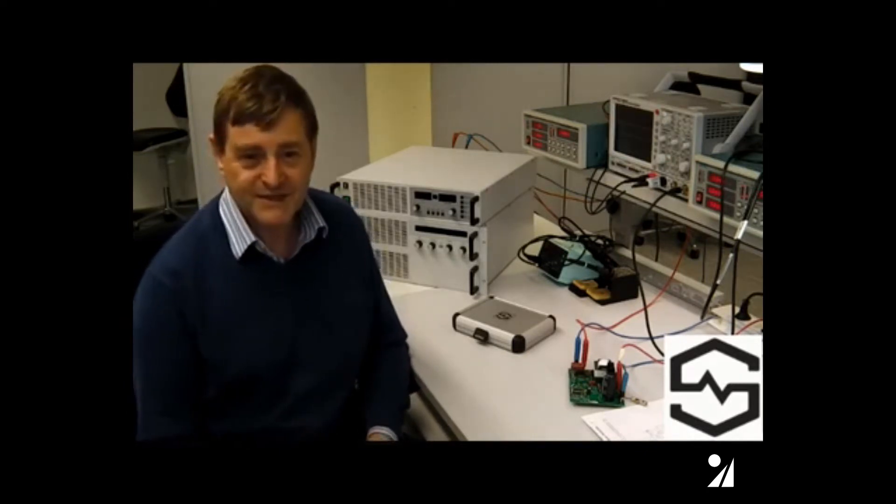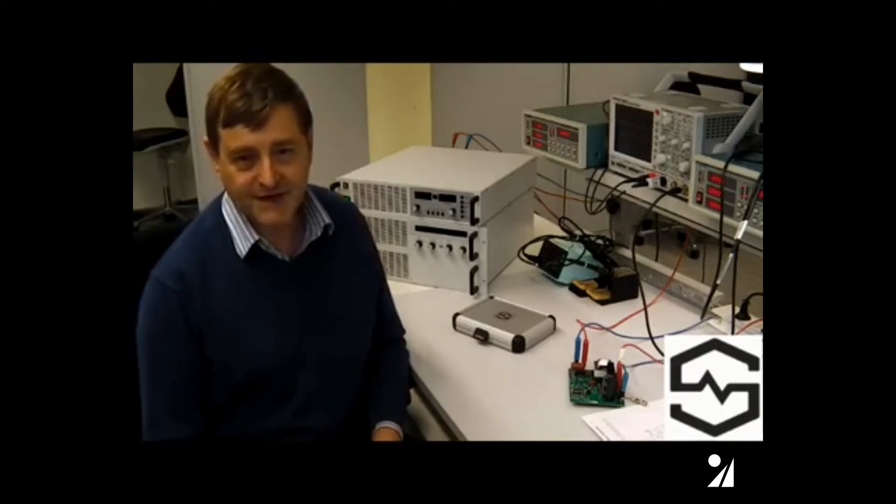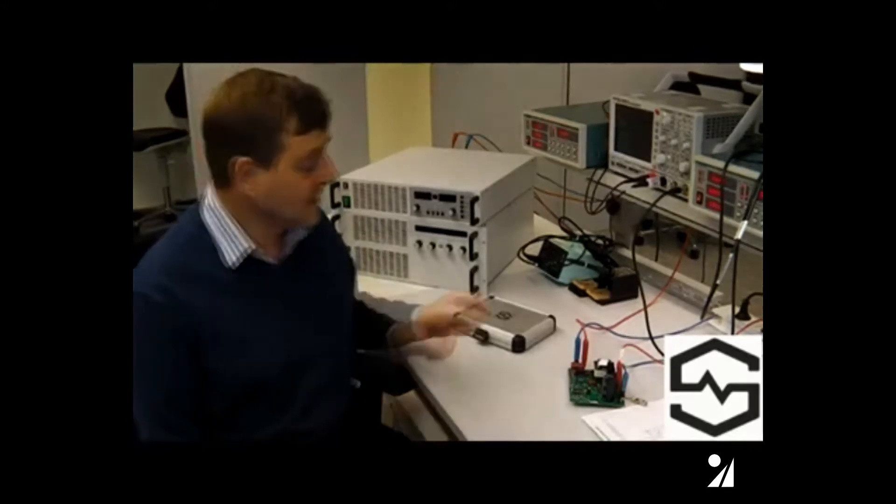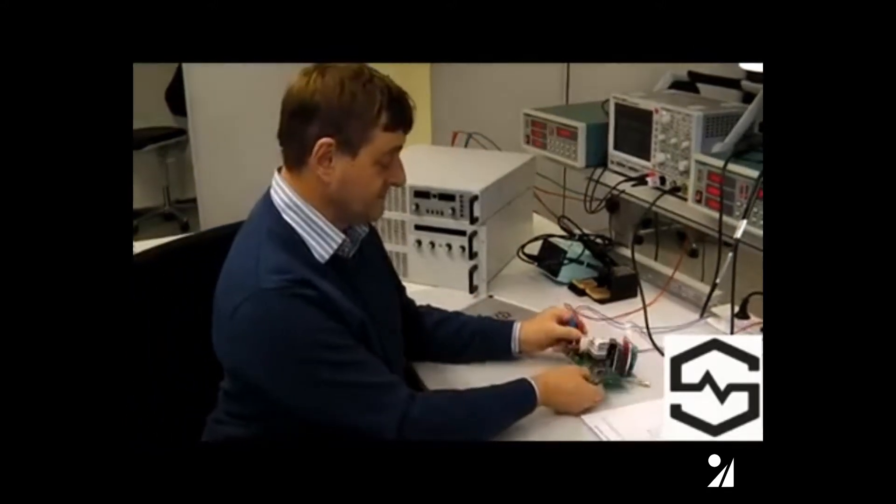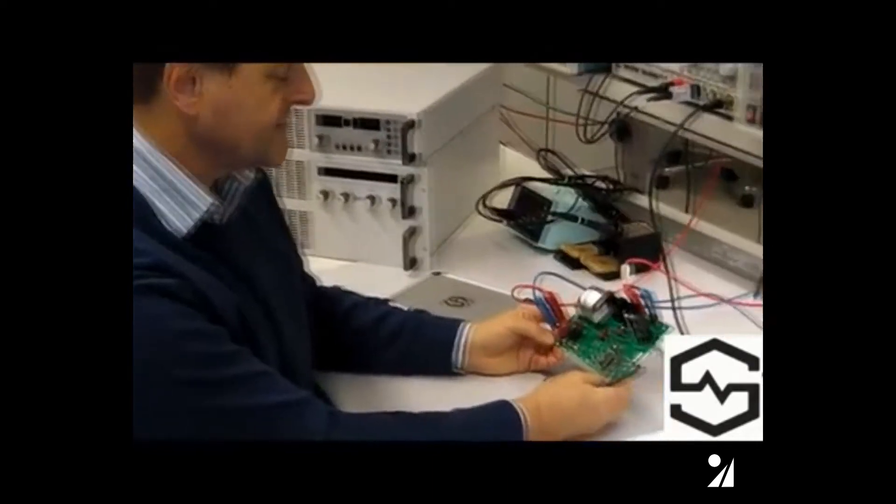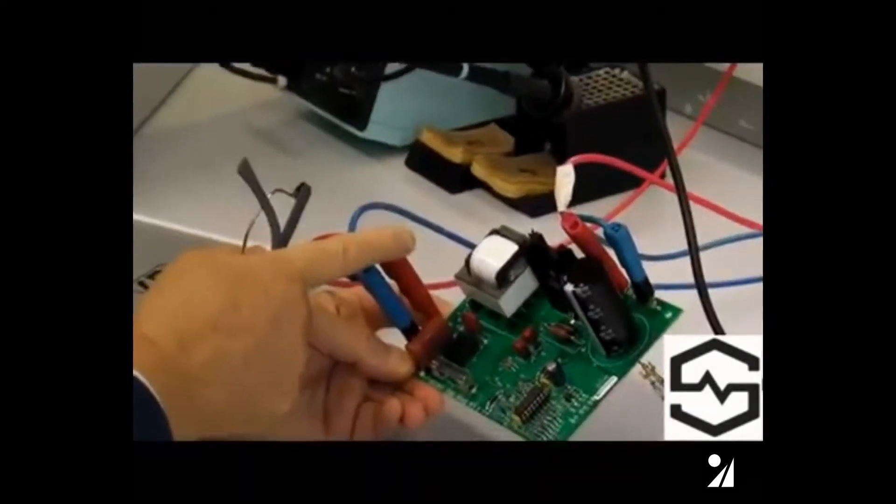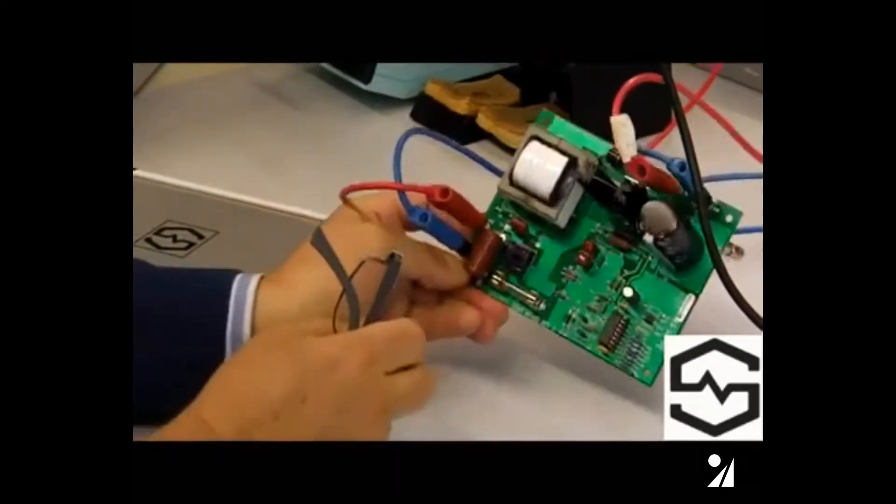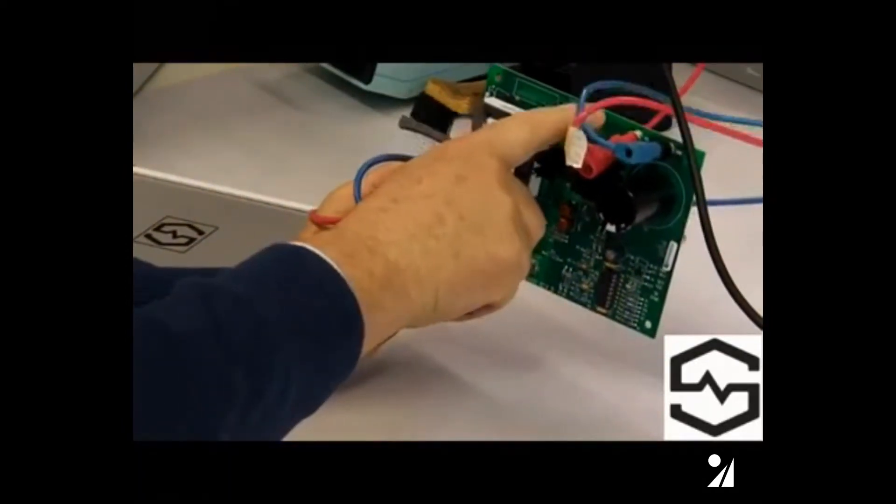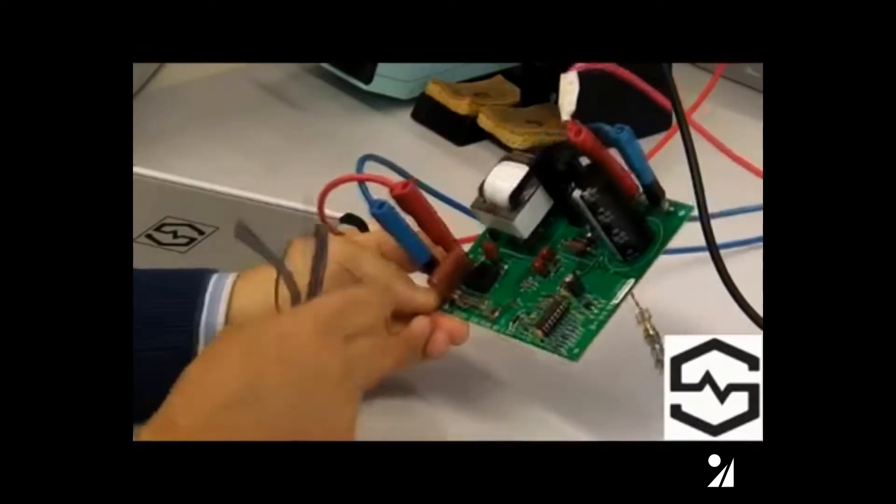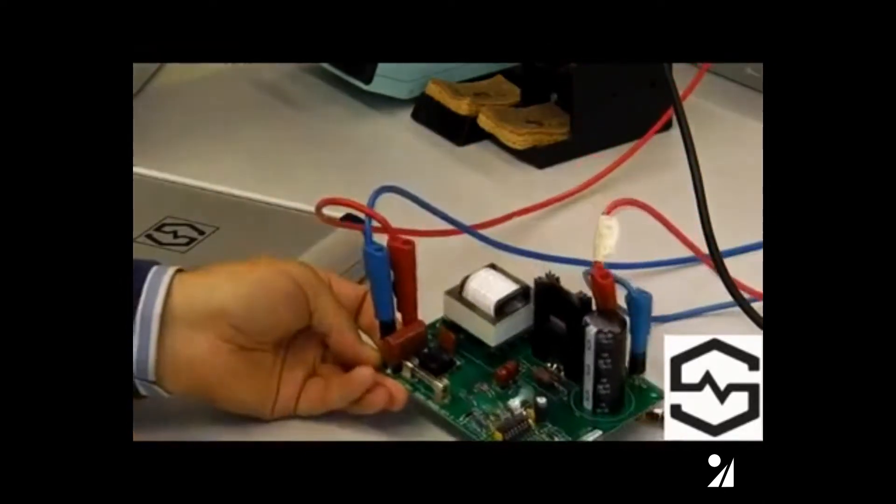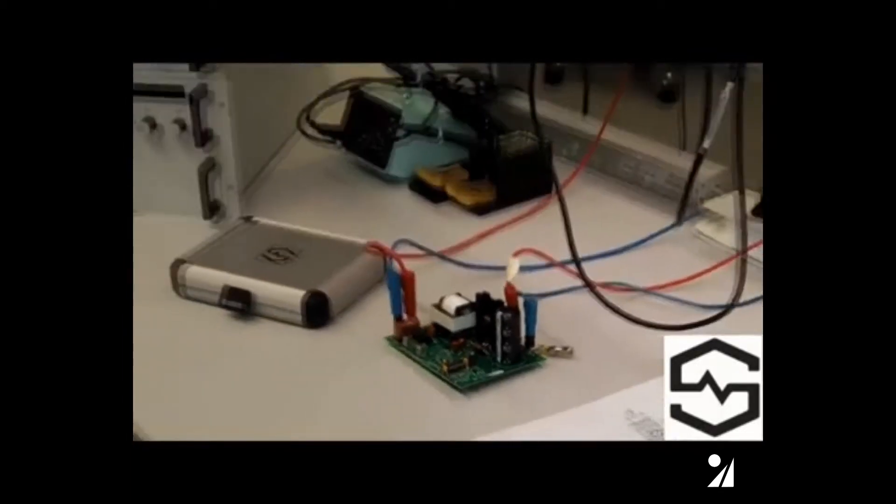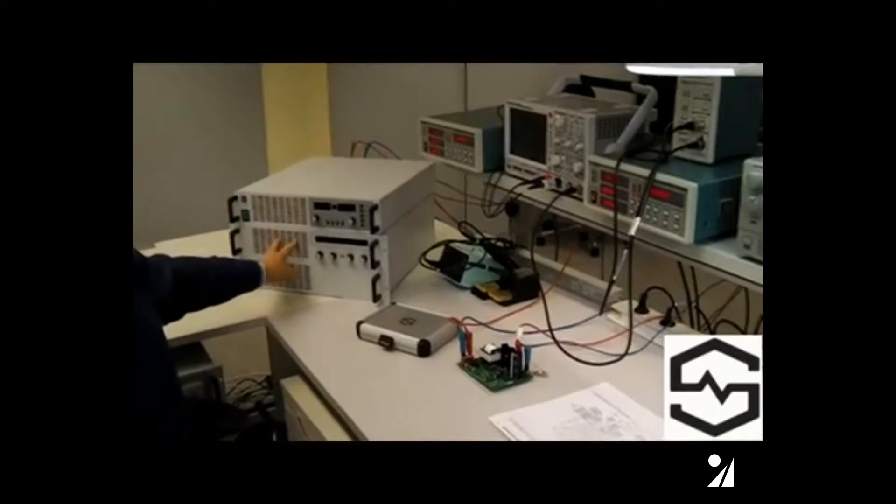What I'm going to do today is show you the application of the clipper in a typical PFC circuit. We have here a TI demo board for the TI UCC3817. We have the input, the power inductor, the MOSFET switching transistor, a silicon carbide diode on the output, and then the 400V output. We've connected this up in our lab with a DC source to make measurements easier and a simple load.